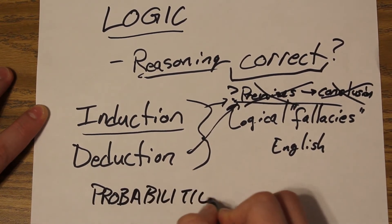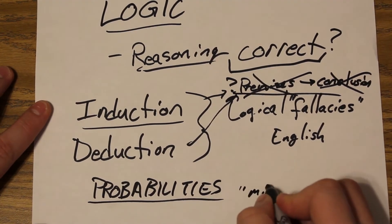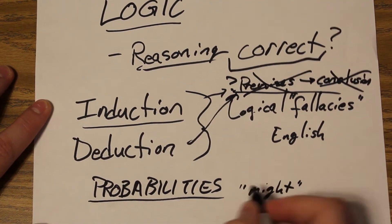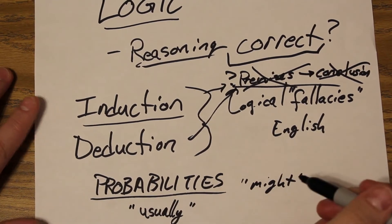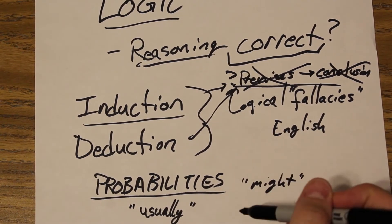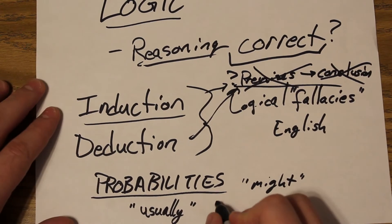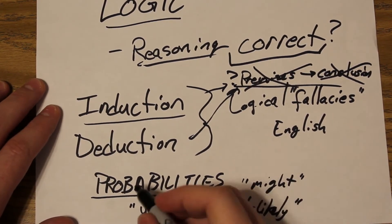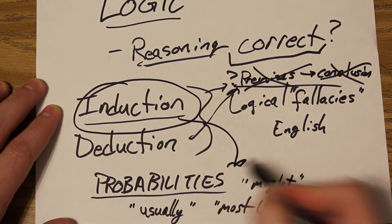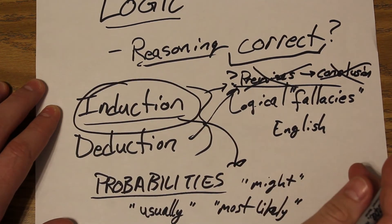Induction uses probabilities. You have might, could, usually, sometimes, preferably. Inductively, there's just a measure of uncertainty here. Saying things like most likely will be an uncertainty that occurs. And that's induction. Anytime you hear a sentence that has those words in it, that's using inductive reasoning. So that's the gist of induction.